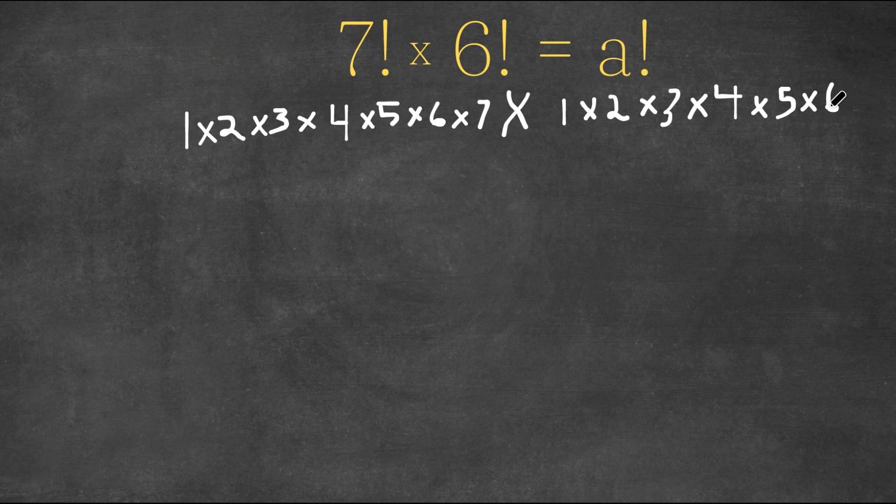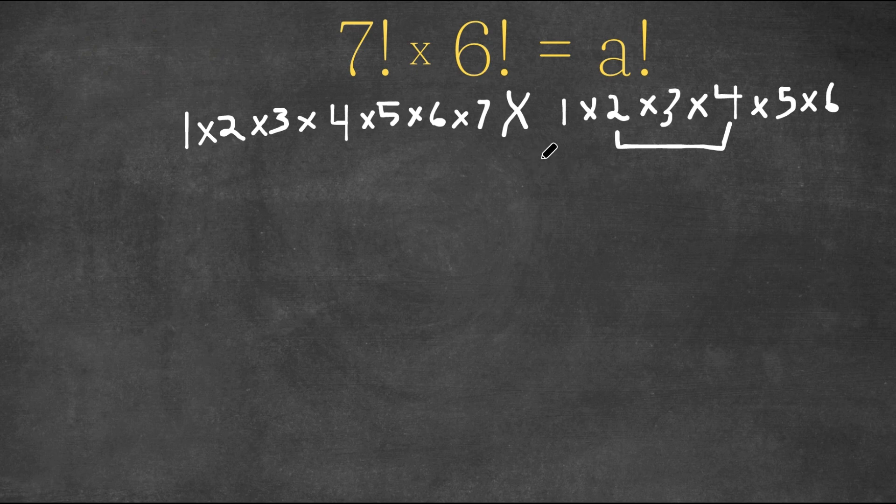Now, as you can see, we have 1 all the way to 7. So now what we're going to do is, well, 2 times 4, these two, equal 8, right? And that's the next number of the sequence. So we have times 8.